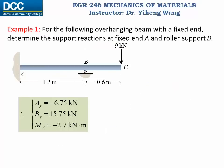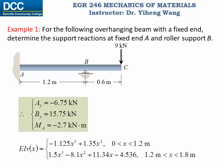These are the support reactions solved from the system of linear equations. The constants in the deflection function were solved simultaneously. As soon as we know the material property and the geometric property — the area moment of inertia I — we can determine the deflection function and the elastic curve for this beam.